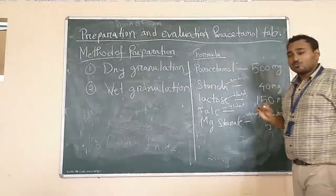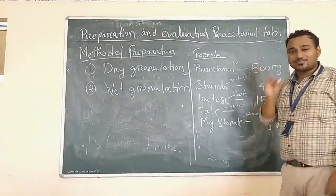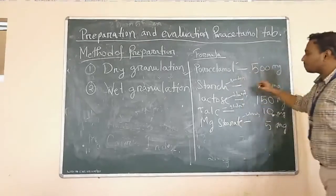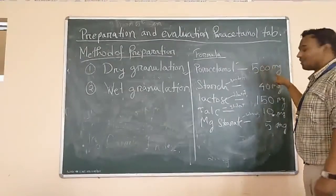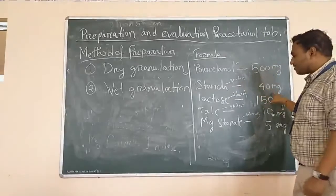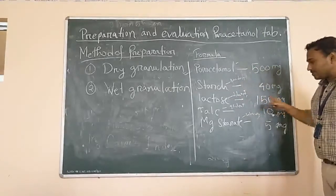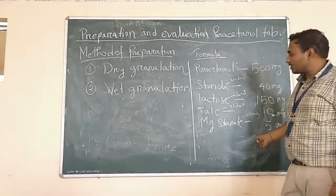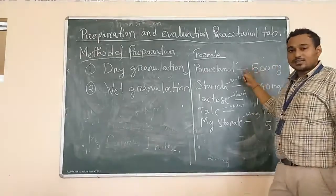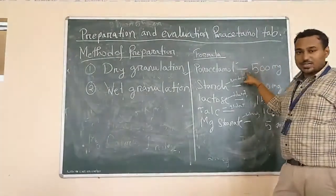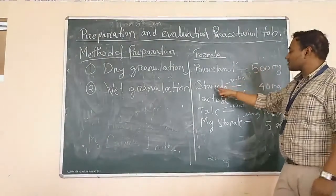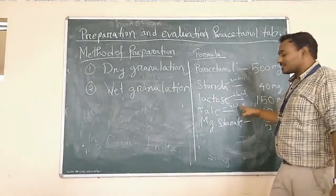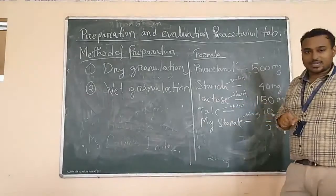For the formulation of paracetamol tablet, the formula is: paracetamol 500 mg, starch 40 mg, lactose 150 mg, talc 10 mg, and magnesium stearate 5 mg. Paracetamol is the active pharmaceutical ingredient, called API. Starch is a binder, lactose is a diluent, talc is a glidant, and magnesium stearate is a lubricating agent.